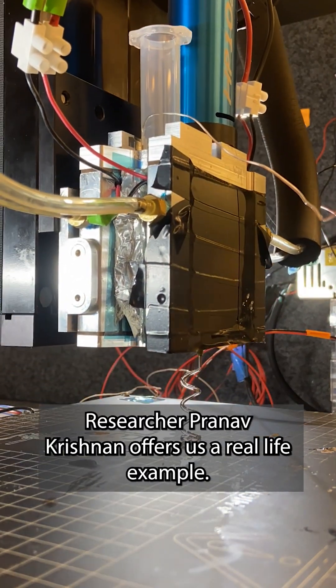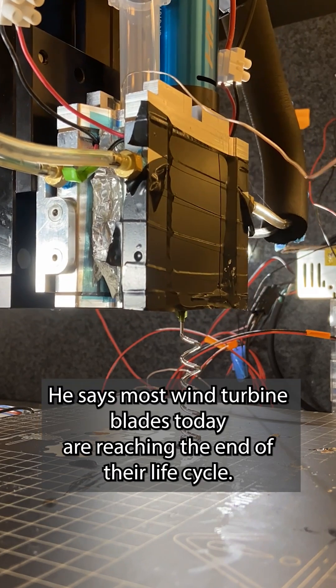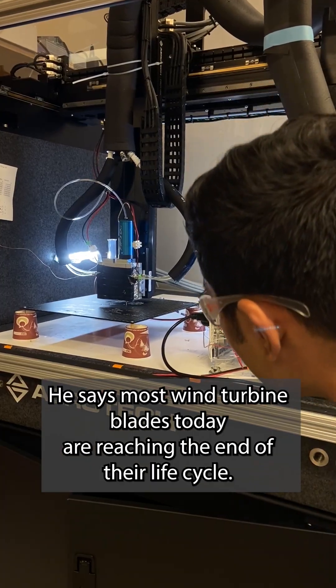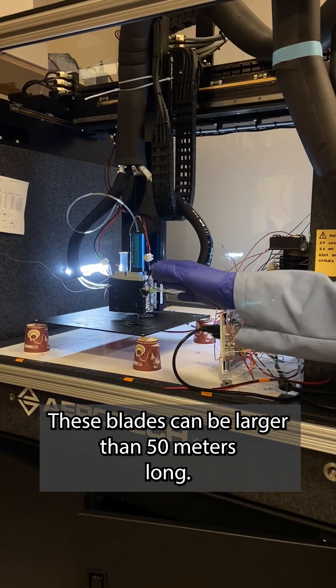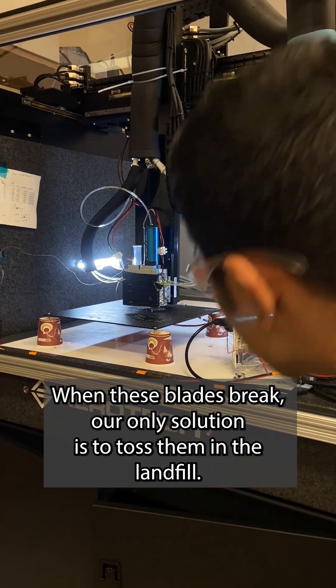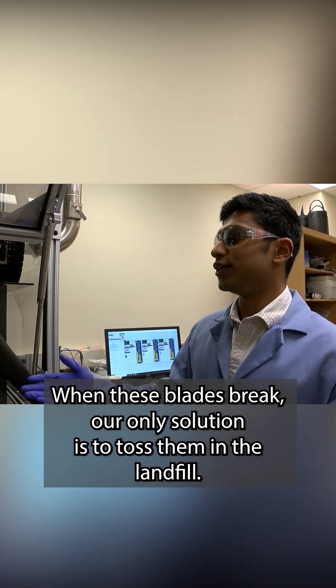Researcher Pranav Krishnan offers us a real-life example. He says most wind turbine blades today are reaching the end of their life cycle. These blades can be larger than 50 meters long. When these blades break, our only solution is to toss them in the landfill.